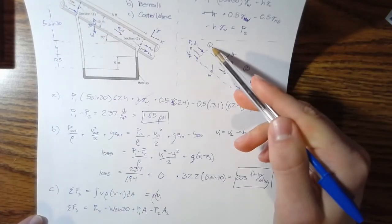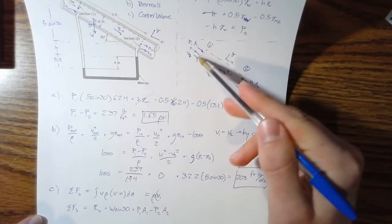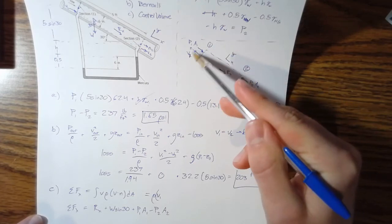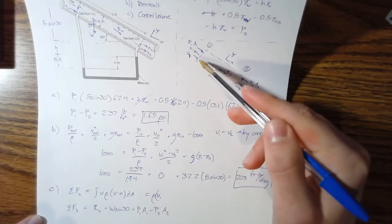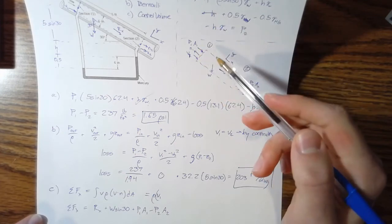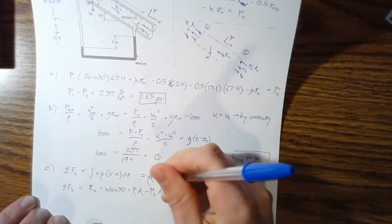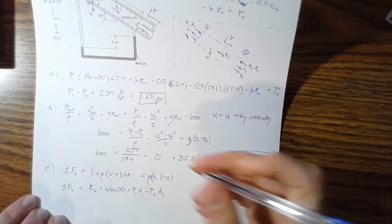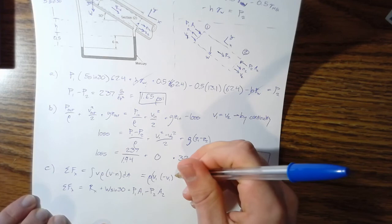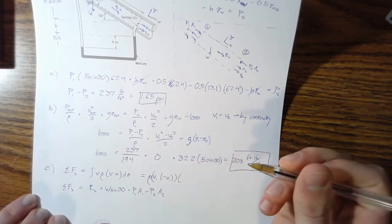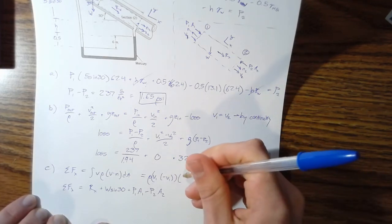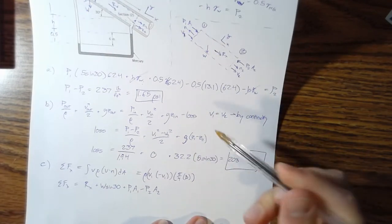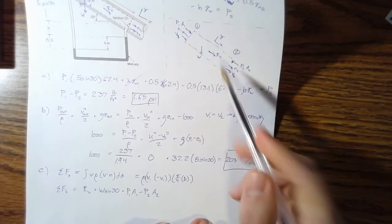So negative V one is what happens there. And then we have multiplied by, since our area is constant, DA just becomes pi over four times the diameter. And then we do the same thing for the second control surface. So rho times V two, this time for the dot product, they're moving in the same direction, the normal and the velocity vector. So we just multiply by V two and then the pi over four times.